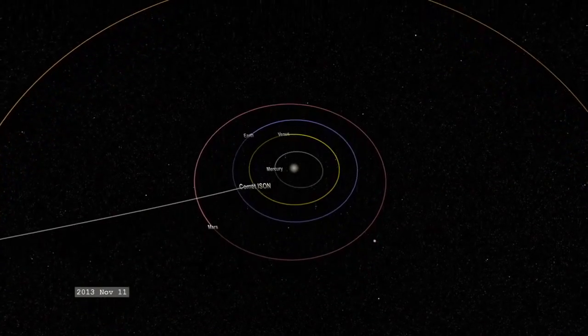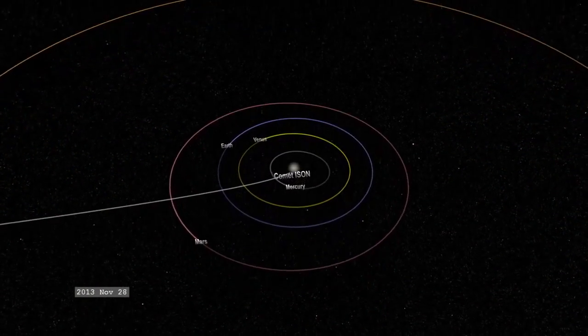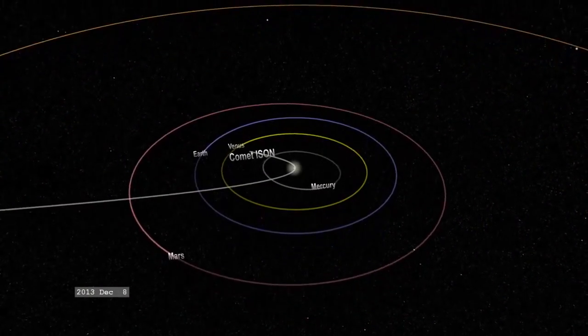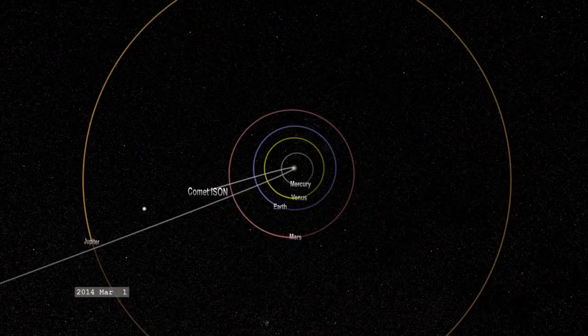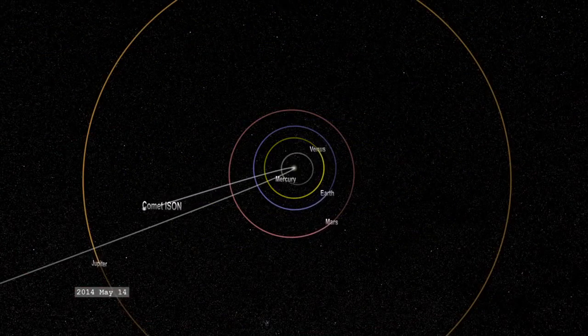Comet ISON, an upcoming sungrazer with perihelion on November 28, 2013, is not on the Kreutz path. In fact, ISON's orbit suggests that it may gain enough momentum to escape the solar system entirely and never return.